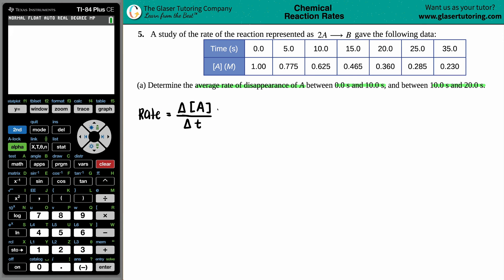So we should have an initial concentration with an initial time, and a final concentration with a final time. Remember, a change is always final minus initial. So in this case: Rate = Δ[A]/Δt, which equals the final concentration of A over the final time, minus the initial concentration of A over the initial time.